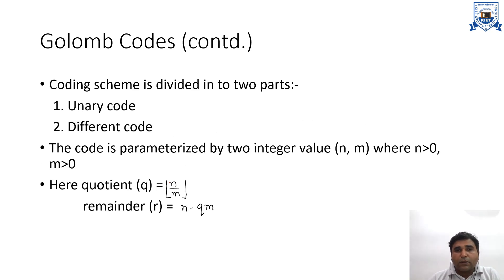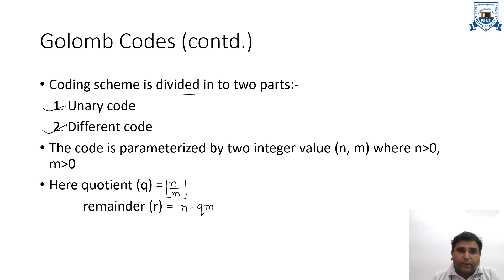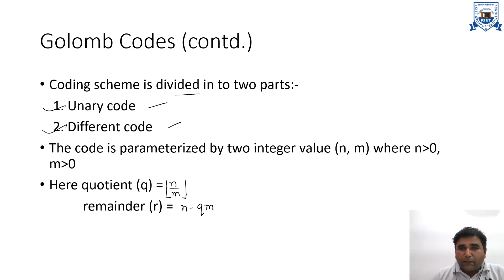Golomb codes basically divide this scheme into two parts. The first part is unary code and the second part is truncated binary (different) code. To find out the Golomb codes, we have to find the unary code as well as the truncated binary code, which we will discuss in the next slide.